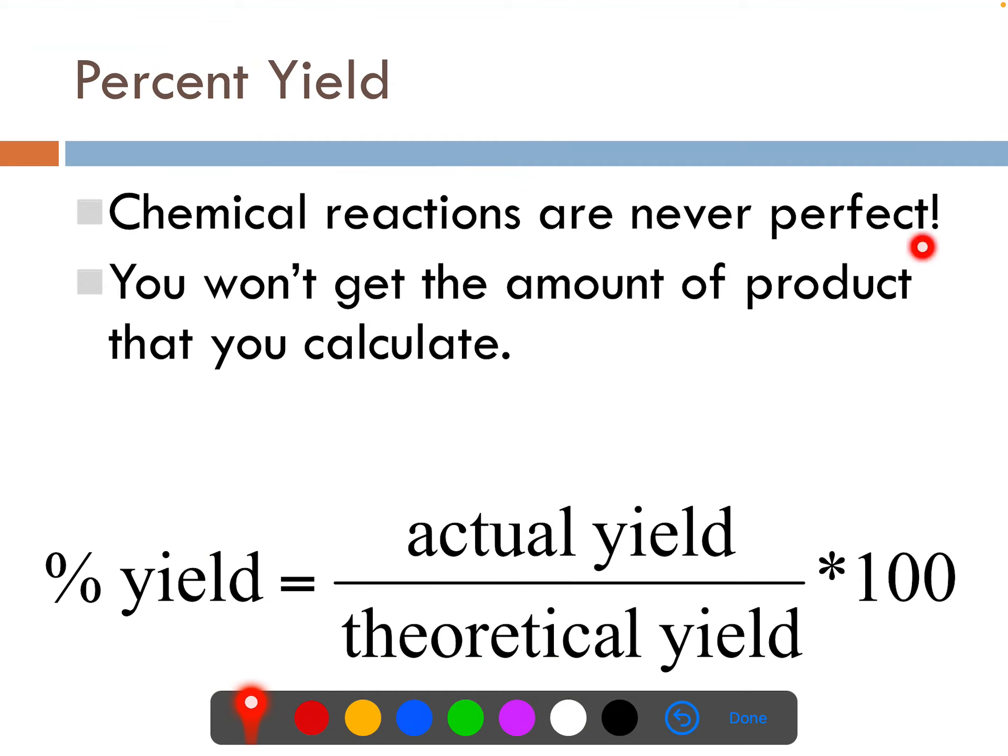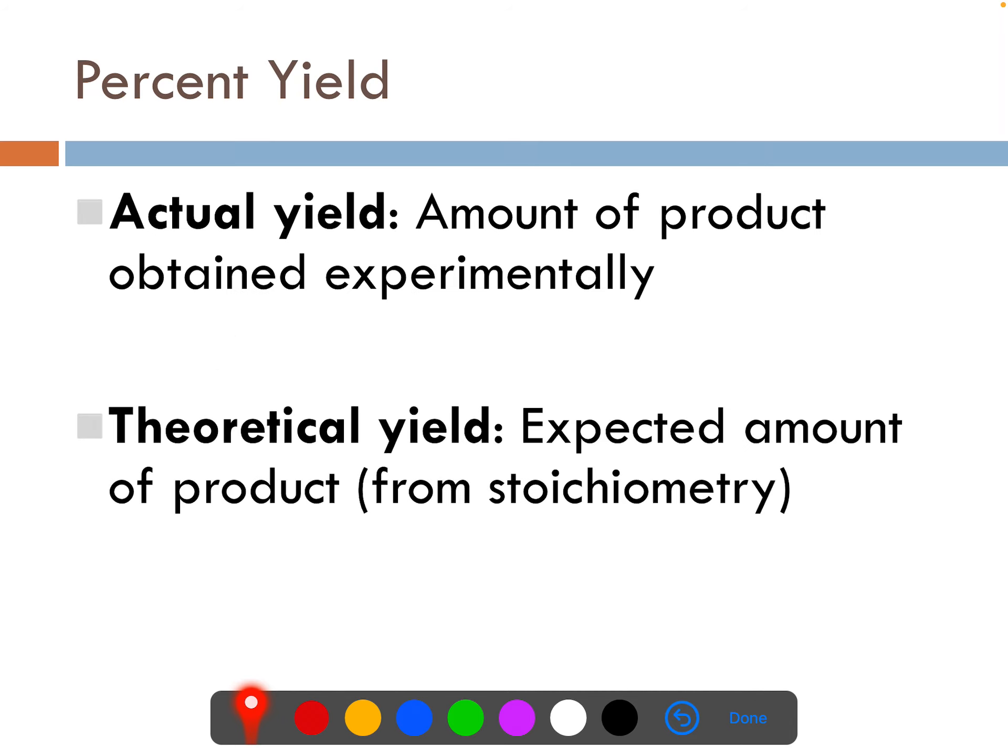Chemical reactions are never perfect. You're not going to get the amount of product that you calculate with stoichiometry. So the percent yield equation says the actual yield divided by the theoretical yield will give us the percent yield. That's the percent you're going to make.